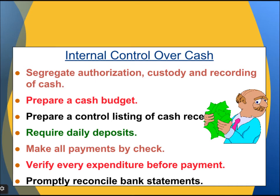Internal control over cash involves: segregating authorization, custody, and recording of cash; preparing a cash budget; preparing a control listing of cash receipts; requiring daily deposits; making all payments by check; verifying every expenditure before payment; and promptly reconciling bank statements.